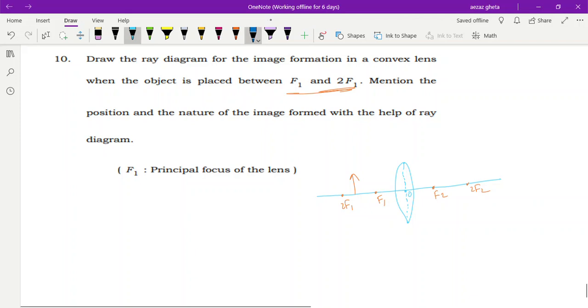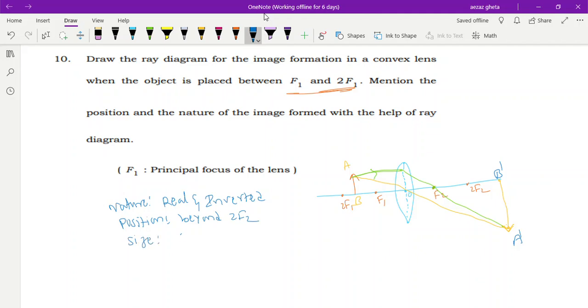The ray of light passes parallel to principal axis. Rule: whenever ray of light is parallel to principal axis, after refraction it passes through principal focus. Another ray of light passes through optic center - it goes without any deviation. Image is real and inverted. Here is A, here is B, here your A dash will be, so your nature - the nature of image is real and inverted.